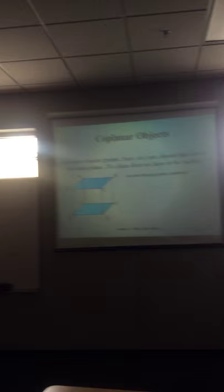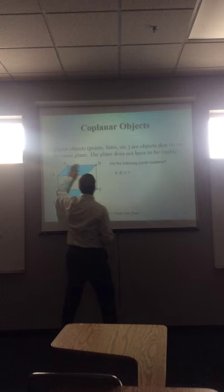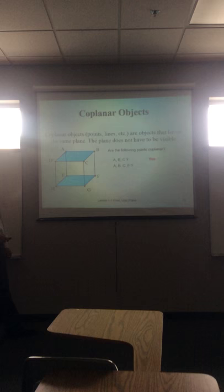All right, so co-planar objects, objects that lie in the same plane. The plane does not have to be visible. It could be at a diagonal, and we will go through some of that. All right, so are the following points co-planar? A, B, and C. Yeah, A, B, and C. That's easy, that's the top one.